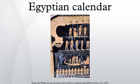Copernicus constructed his tables for the motion of the planets based on the Egyptian year because of its mathematical regularity. The convention amongst modern Egyptologists is to number the months consecutively using Roman numerals.